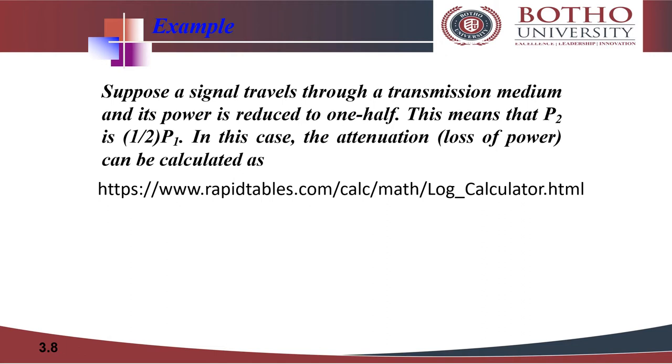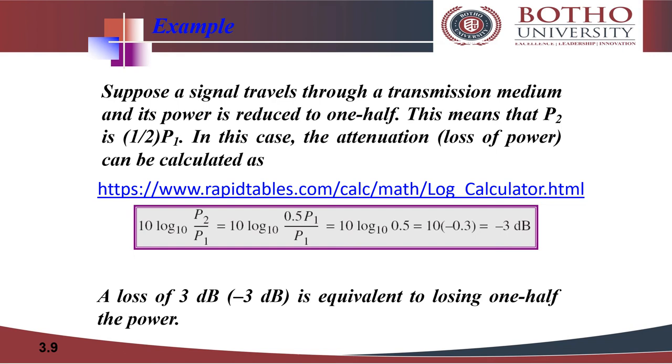Just a point: remember we have to use a log calculator which is available online, so I would suggest you to use this link to calculate log values. The formula to calculate the reduction is 10 log P2 over P1 to the base 10. So in this case P2 is 0.5 P1, so when we substitute the value it becomes 10 log 0.5 P1 over P1 to the base 10, which equals 10 log 0.5 to the base 10.